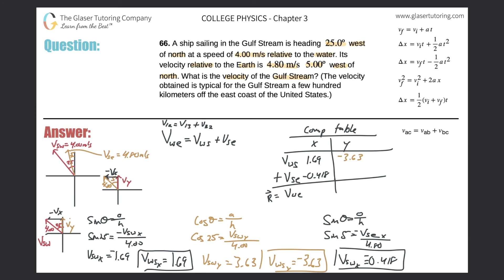For the y component of the ship relative to the earth, the angle is adjacent to the side I want, so I use cosine. Cosine of 5 equals the y-velocity divided by 4.80. That gives positive 4.78. So 4.78 goes into the component table.